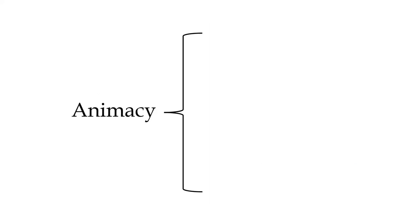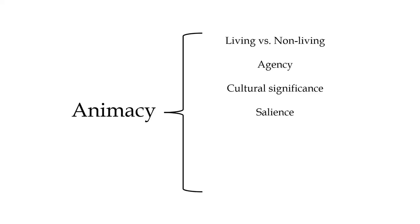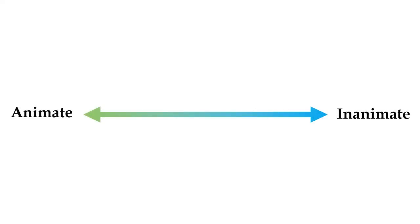What defines a noun as being animate can be difficult to pin down precisely. It's not just a question of whether the noun is alive or not, but it's also strongly correlated with agency – how capable the noun is of taking its own actions – and may also relate to cultural significance, salience, and various other properties. Plus, different languages will draw the lines of what counts as animate in different places. The most straightforward possibility is a simple split between animate and inanimate, but it's very common for languages to distinguish more specific subcategories to form what's called an animacy hierarchy, a spectrum that encompasses every noun in the language.